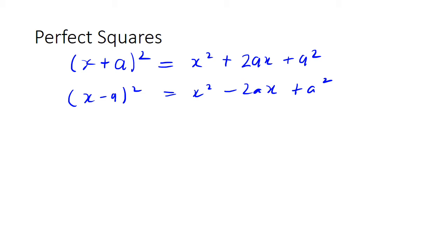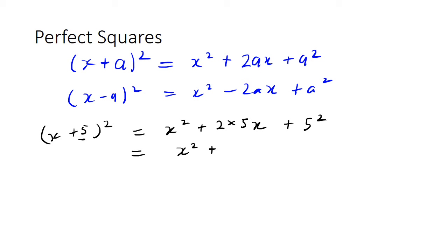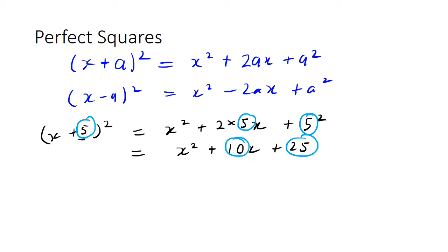As an example, if we have (x+5)² and we expand it, that becomes x² plus 2 lots of 5 times x plus 5², which equals x² plus 10x plus 25. So the coefficient of x is just 5 times 2, and the constant at the end is just 5².